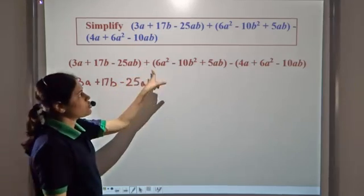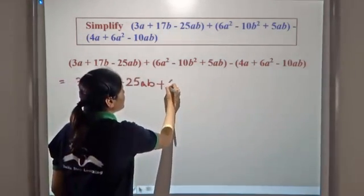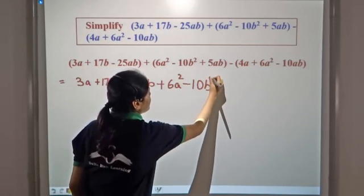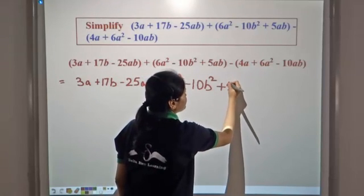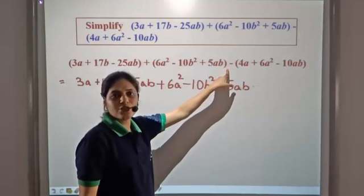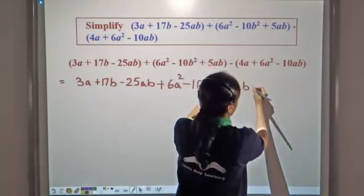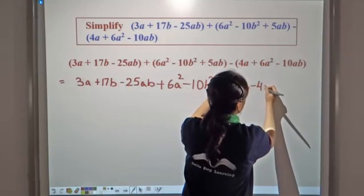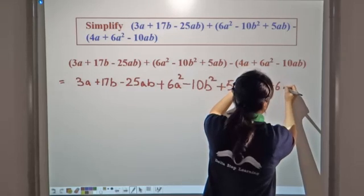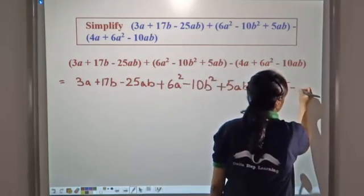Since we have a plus sign here, all the terms are written as they are — there is no change in sign. We have a negative sign for the second bracket, so we need to change the signs of all the terms inside. So plus 4a becomes minus 4a, plus 6a squared becomes minus 6a squared, and minus 10ab becomes plus 10ab.